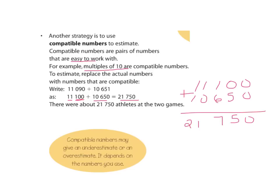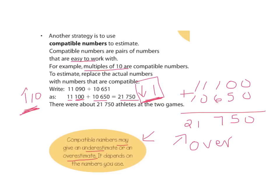When we look at compatible numbers, it may give you an underestimate or an overestimate — it depends on the numbers you use. Here, 11,090 went up to 11,100, which is an increase of 10, and 10,651 went down to 10,650, which is only a decrease of 1. So this is actually an overestimate. See how much went up and how much went down — that's how you determine whether it's an underestimate or an overestimate.